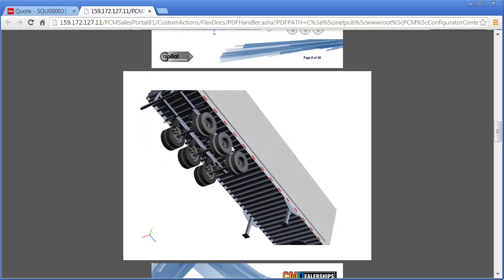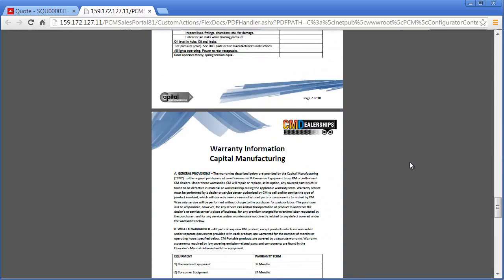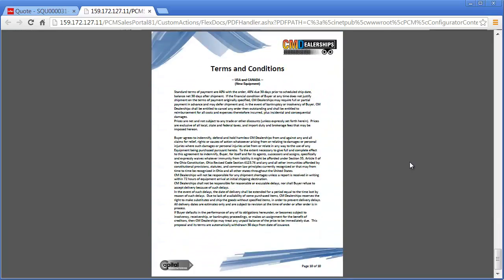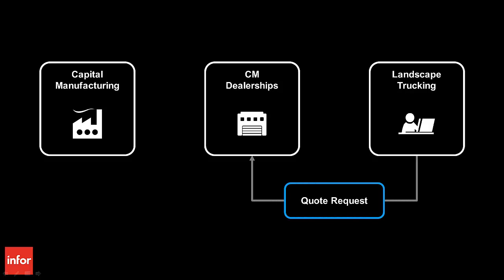The specification sheet, pre-delivery inspection forms, warranty information, and terms and conditions have all been updated with the information provided by Nick during the quoting process. We have just seen how CM Dealerships uses Infor Product Configuration Management, provided by Capital Manufacturing, to respond to a request for quote from Landscape Trucking — generating 100% complete and accurate quotes in a matter of minutes, easily configuring their complex product lines, and providing their customers more product options and faster new product introductions. Landscape Trucking values Capital Manufacturing's ability to meet all of their unique trailer specifications and a quick proposal turnaround combined with the completeness and professionalism of the proposal provided by CM Dealerships.